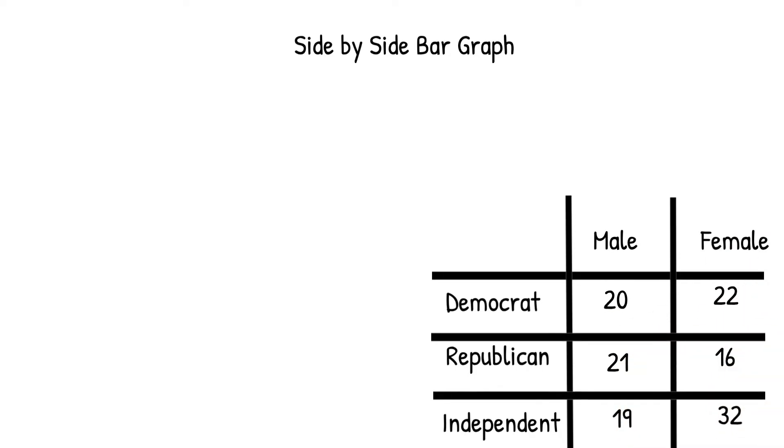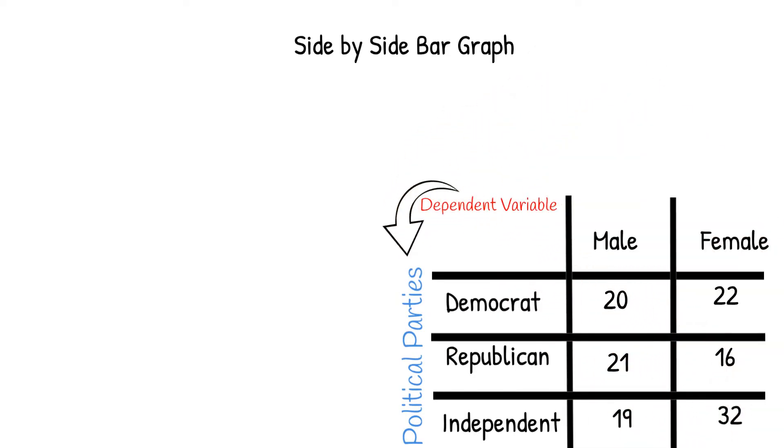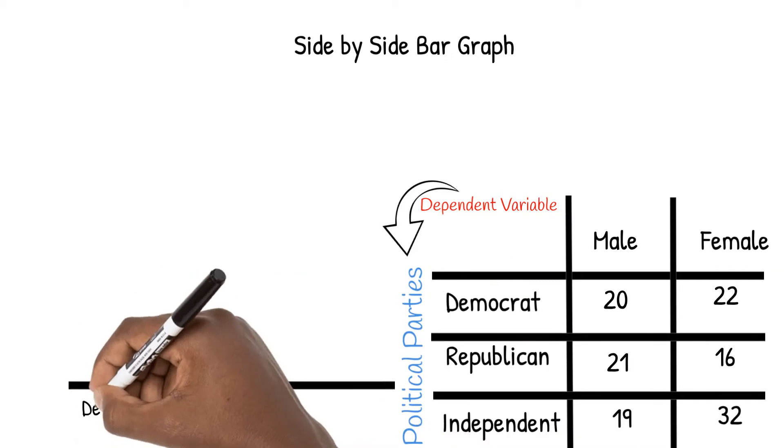To determine the variables, think of questions asked. One of our variables in this study is political parties. We put these categories on a line that will ultimately be our x-axis of our graph.